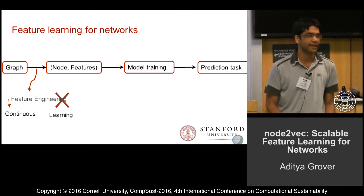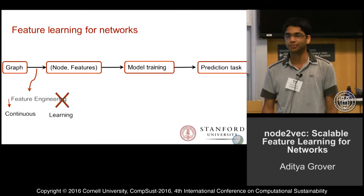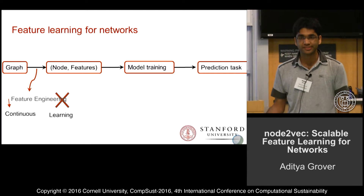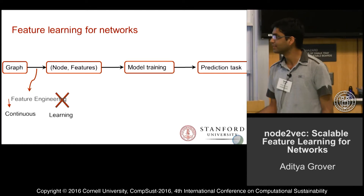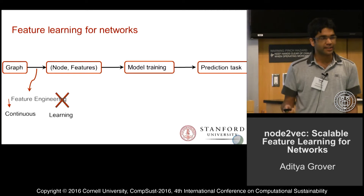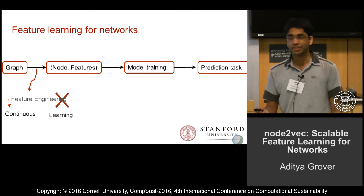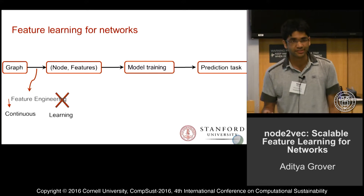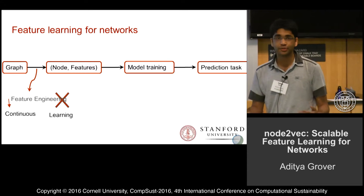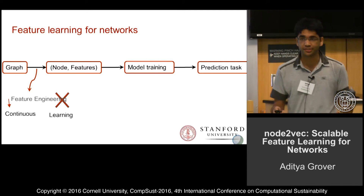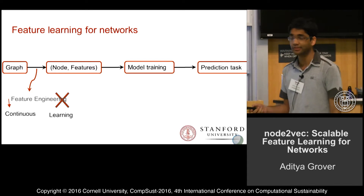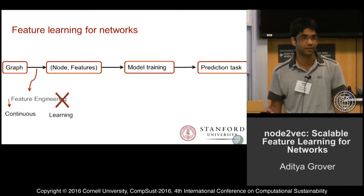Machine learning and networks are ubiquitous in many domains including those involving sustainability. A key bottleneck in applying machine learning to networks is in transforming the raw graph into a representation that is easily interpretable by downstream prediction algorithms.